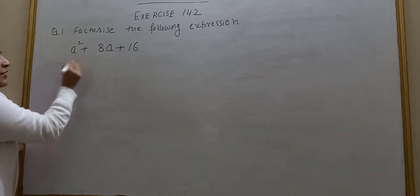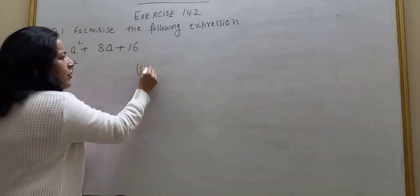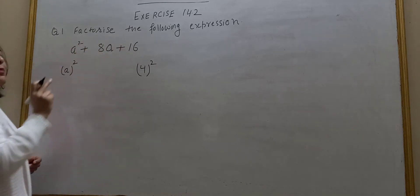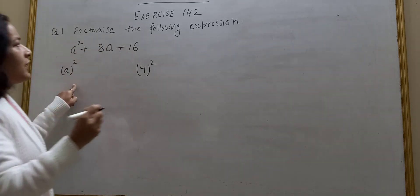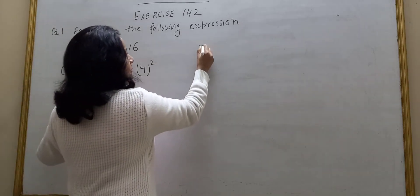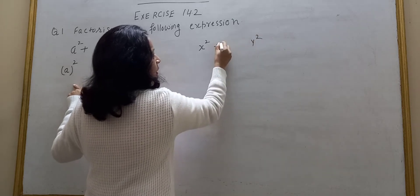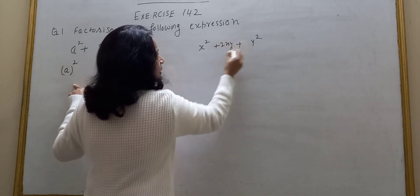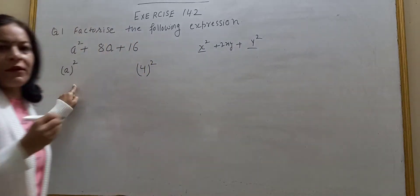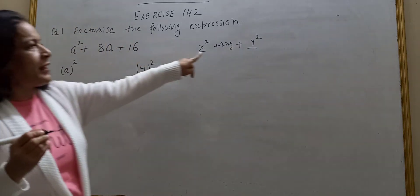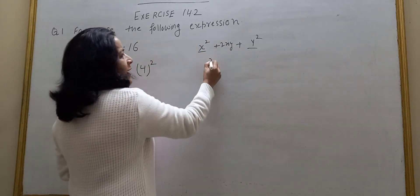A squared and 16 is 4 squared. First term and last term are positive and are perfect squares. So I use the identity: X squared plus Y squared plus 2XY. First term is a perfect square, second term is a perfect square, and the middle term is 2 times first term times second term.